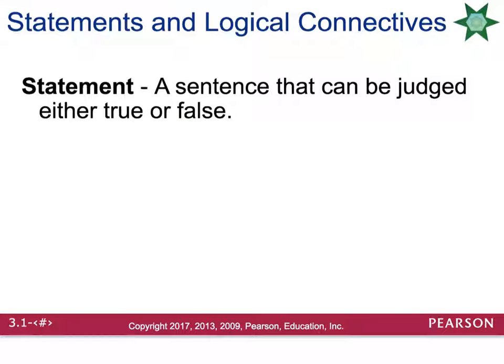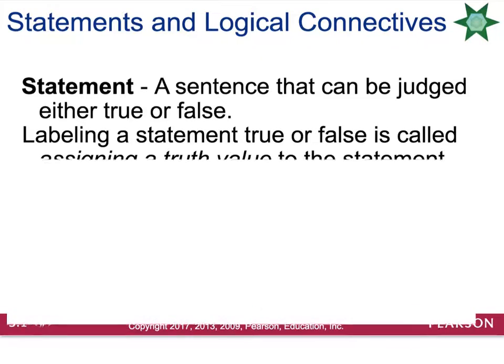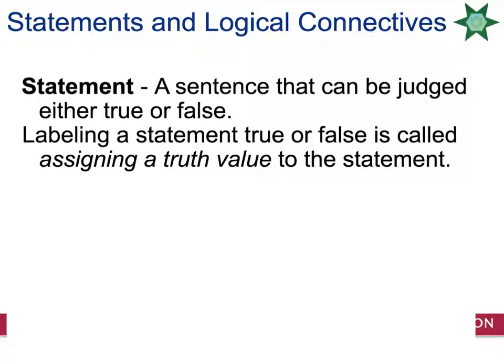A statement is a sentence that can be judged either true or false. For example, 'Hawaii is one of the states in the United States' could be proven true or false. You don't want to include opinions, like 'Hawaii is the best state,' because you can't prove that true or false. When we confirm whether something is true or false, that is called assigning a truth value.